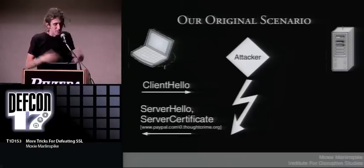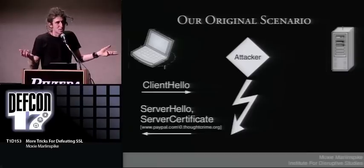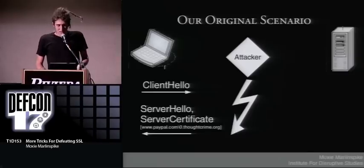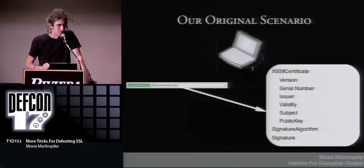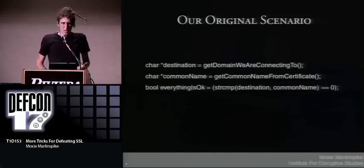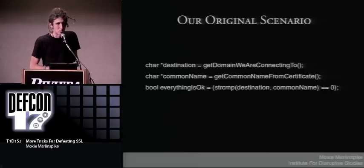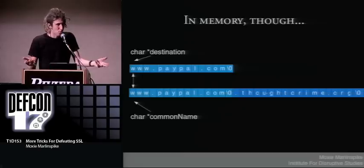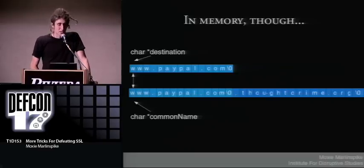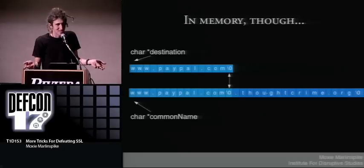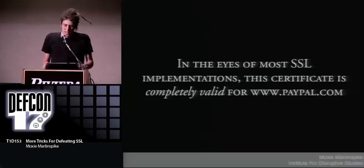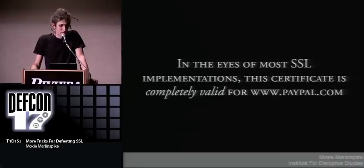Now we're doing our man-in-the-middle attack. We intercept the client hello, send back server hello, and our certificate is www.paypal.com[nullcharacter].thoughtcrime.org. The first thing the client does is check the subject. The code might look like: char* destination = get_domain_we're_connecting_to; char* common_name = get_common_name_from_certificate; and strcmp(destination, common_name). strcmp is going to check each character, keep going until it encounters a null character — which indicates the end of the string — and return success. What this means is that in the eyes of most SSL implementations, this certificate is completely valid for www.paypal.com.